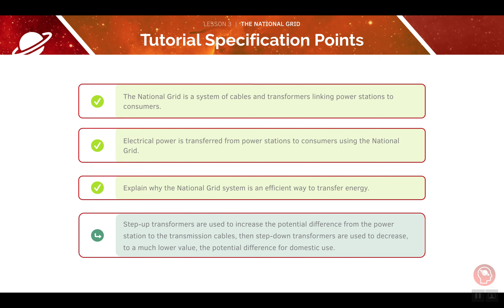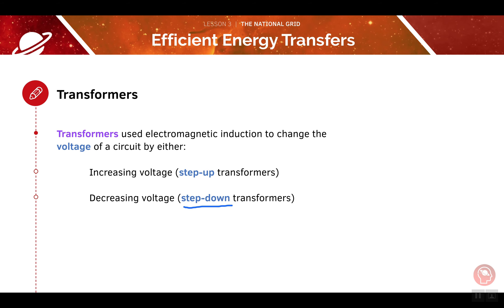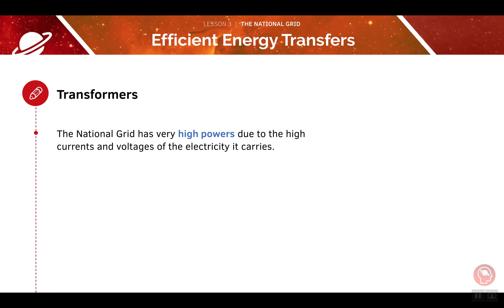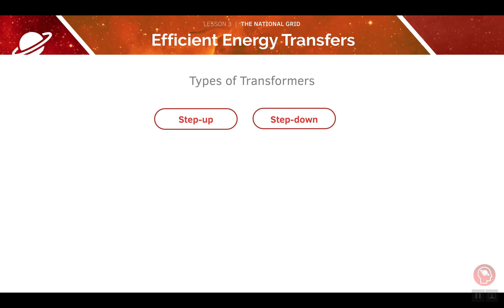Now let's look at step-up transformers. Transformers change the voltage of a circuit. They use electromagnetic induction to do this. They will either increase it using step-up transformers or decrease it using step-down transformers. The national grid has very high powers, meaning very high currents and voltages. During transport, we will boost the voltage very high, which makes the current very low but maintains the same power.